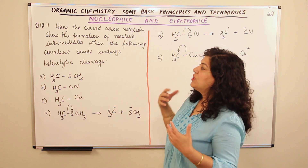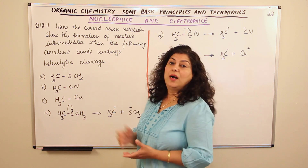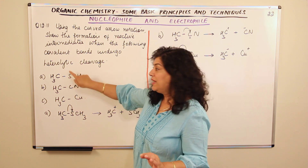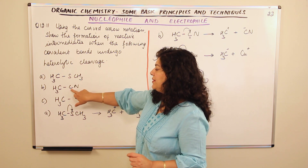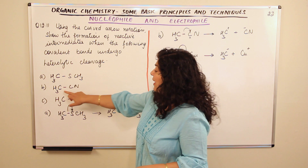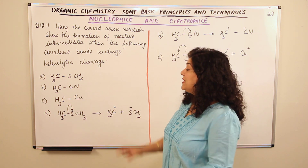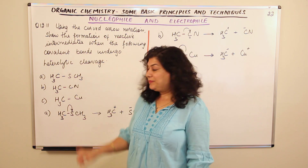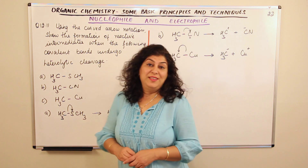Using the curved arrow notation, we showed the formation of reactive intermediates in all three cases: sulphur being more electronegative pulls electrons from C-S; nitrogen's inductive effect makes CN carbon electron-deficient pulling electrons to give CN⁻ and CH3⁺; and copper being a metal pushes electrons to carbon giving CH3⁻ and Cu⁺.